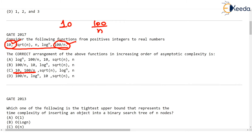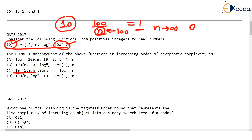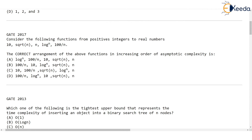But here is where we have to think. What is smaller — 10 or 100/n? n is any positive integer. What if n = 100? Then 100/n = 1. As n grows larger and larger, 100/n becomes smaller and smaller. As n tends to infinity, 100/n tends to 0. But 10 will remain 10. So the function with the smallest asymptotic complexity is not 10 but 100/n. So options A and C are eliminated — only B and D have 100/n first.